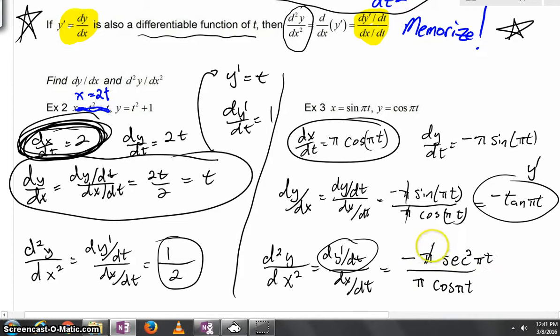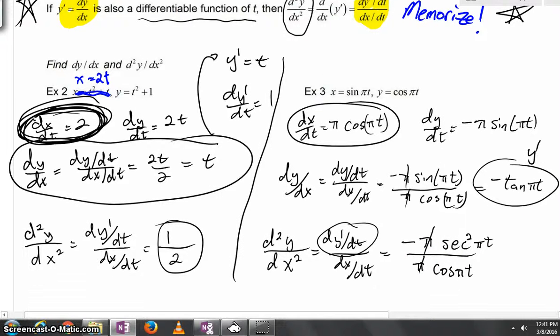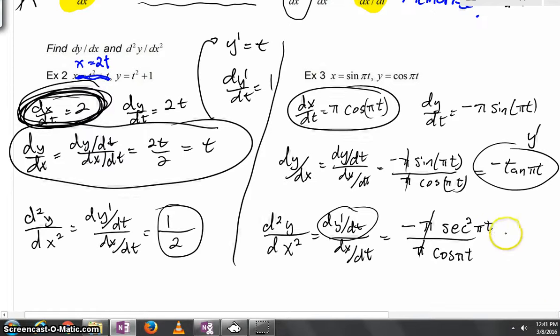And, thankfully, you can see these pi's are going to cancel out. Now, dividing by cosine is actually the same thing as multiplying by 1 over cosine. So I hope it's not too much of a jump to see. This is really negative secant cubed of pi t.